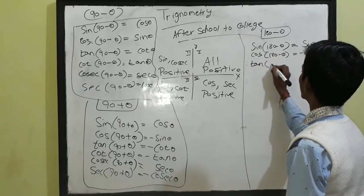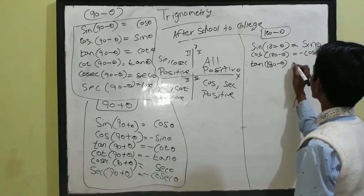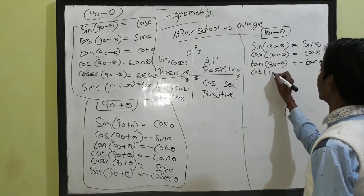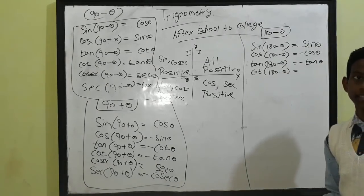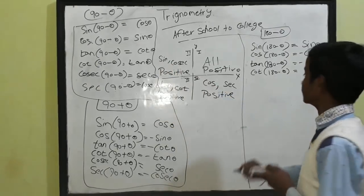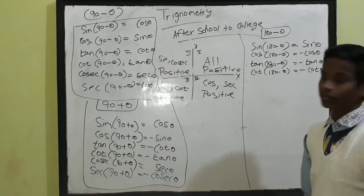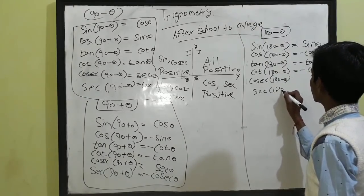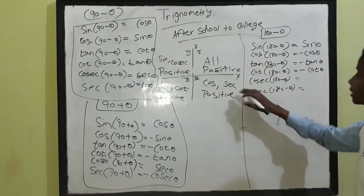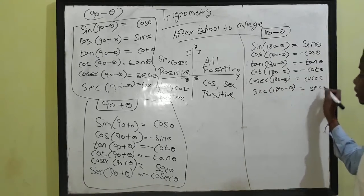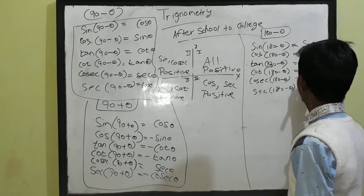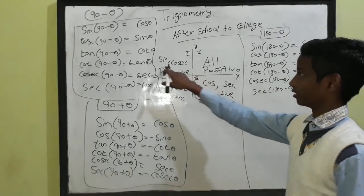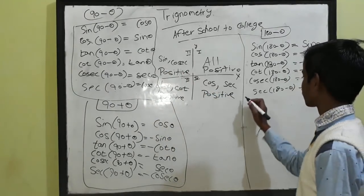Tan(180 − θ): is there any tan in the second quadrant? No, so tan(180 − θ) = −tan θ. Cot(180 − θ): is there any cot? No, so cot(180 − θ) = −cot θ. For cosec(180 − θ): cosec is positive in the second quadrant, so cosec(180 − θ) = +cosec θ. For sec(180 − θ): there is no sec in the second quadrant, so sec(180 − θ) = −sec θ. Did you get it?